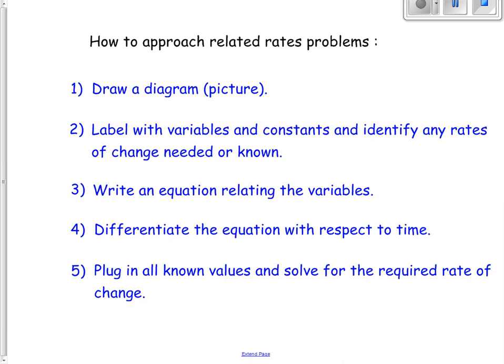To summarize, in general, how do we approach related rates problems? First thing you do is draw a diagram. Then you label with variables and constants and identify any rates of change that are given and what rates of change are needed. Then, looking at all your variables, write an equation relating those variables. Differentiate the equation with respect to time. Plug in all the known values and solve for your required rate of change. And as in the last example, occasionally you might have to do a side equation to help with some of the variables whose values are not given to you.